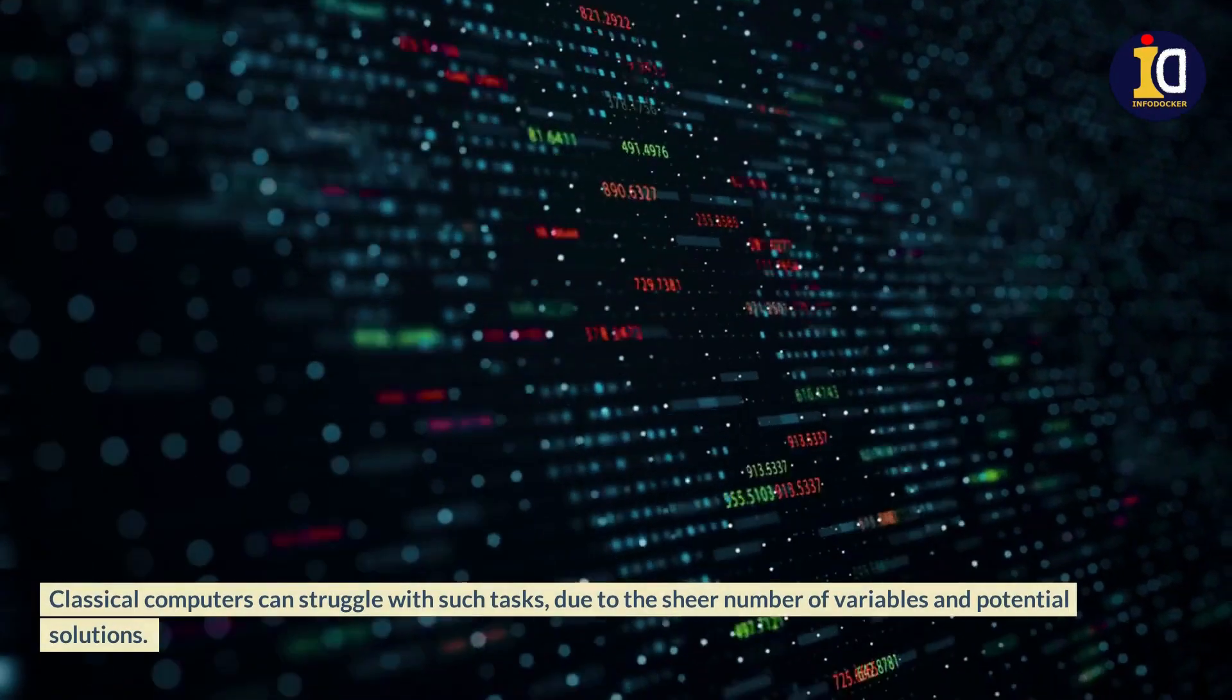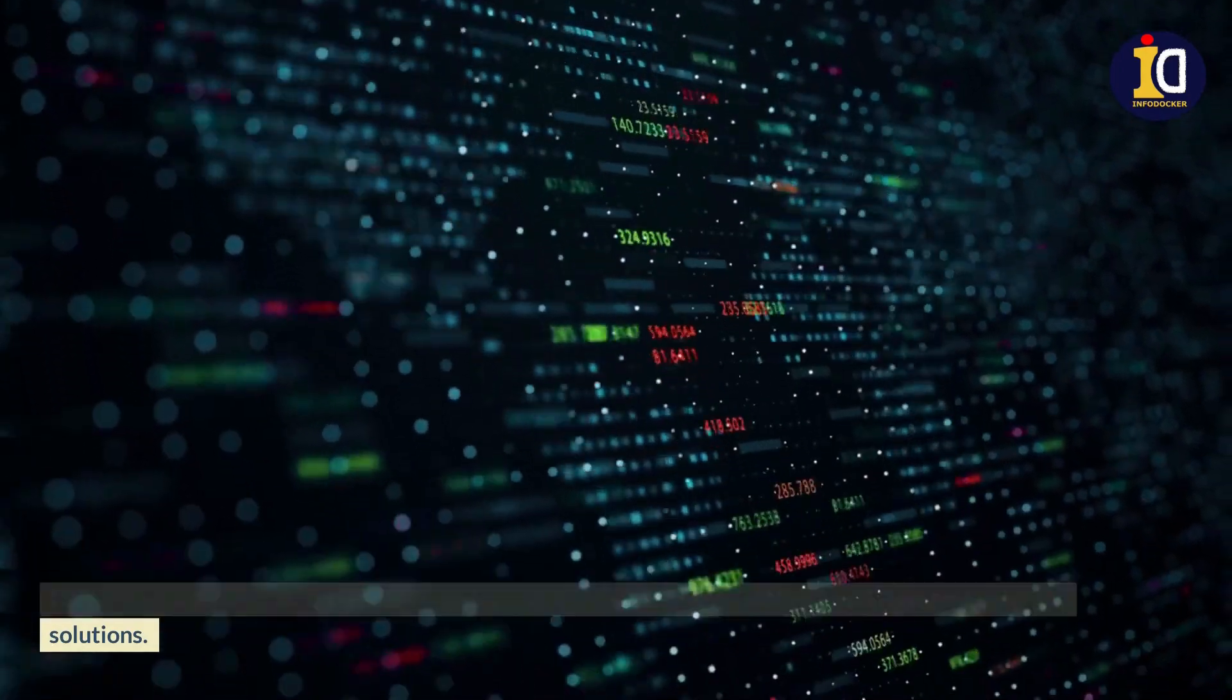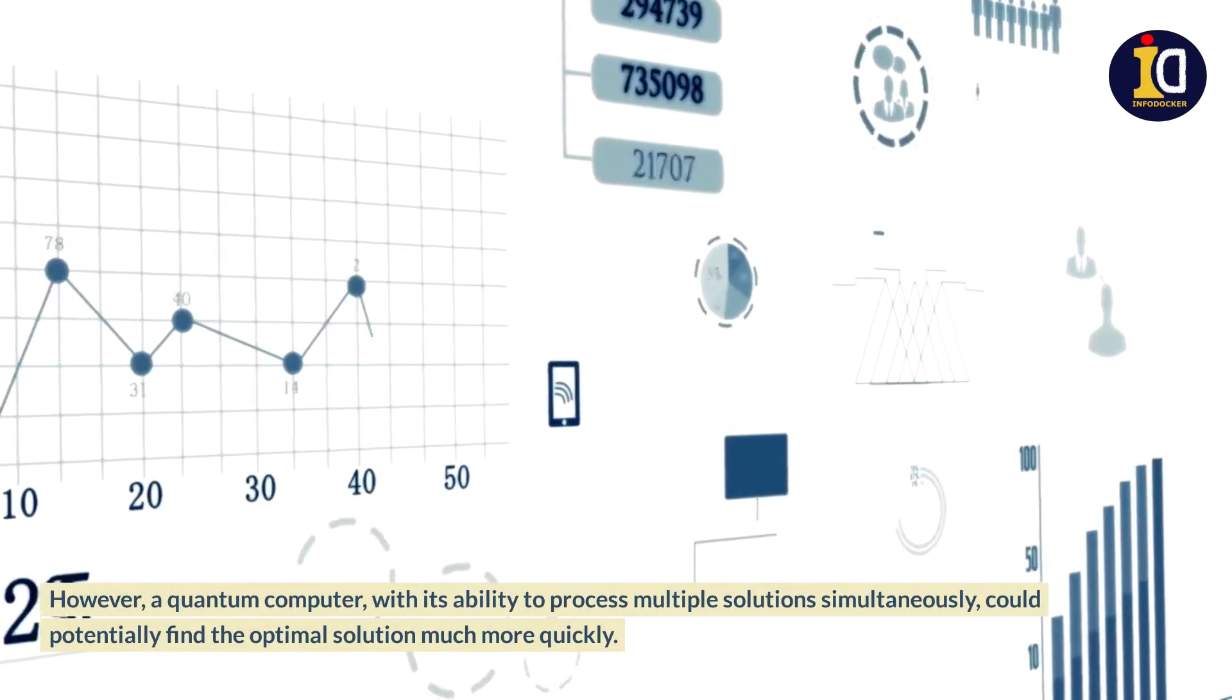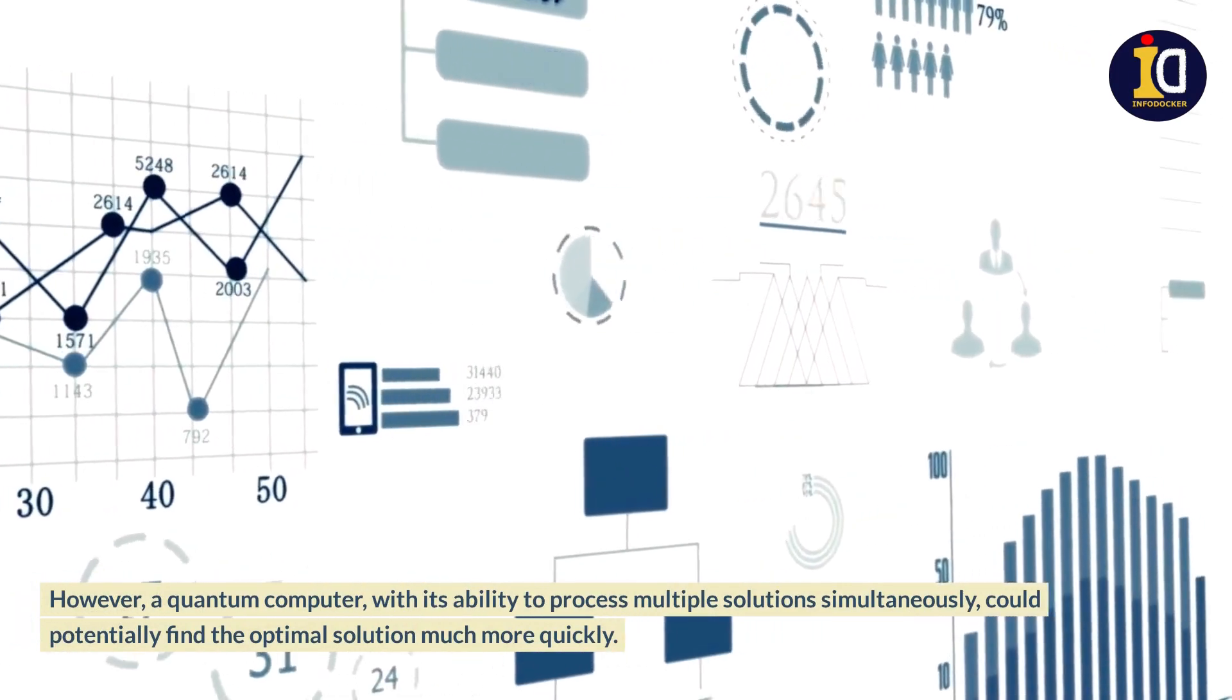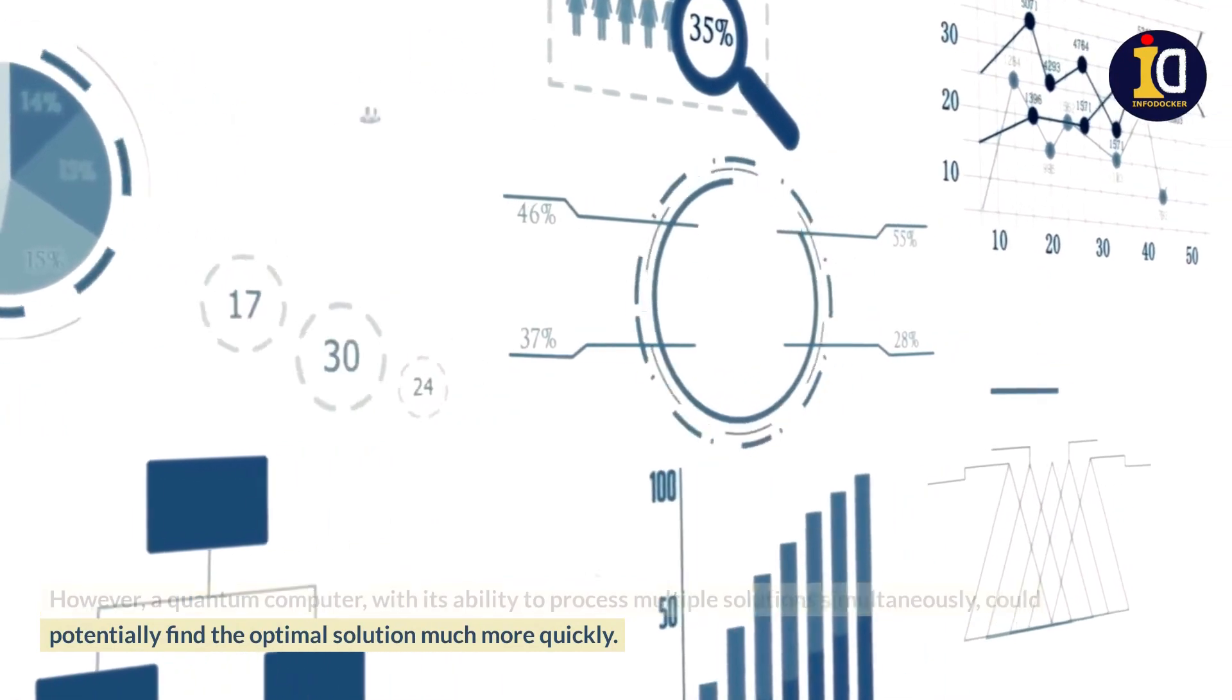Classical computers can struggle with such tasks due to the sheer number of variables and potential solutions. However, a quantum computer, with its ability to process multiple solutions simultaneously, could potentially find the optimal solution much more quickly.